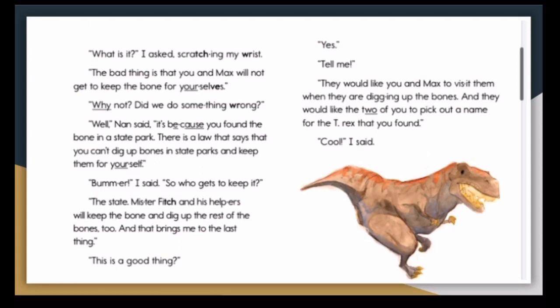What is it? I asked, scratching my wrist. The bad thing is that you and Max will not get to keep the bone for yourselves. Why not? Did we do something wrong? Well, Nan said, it's because you found the bone in a state park. There is a law that says that you can't dig up bones in the state park and keep them for yourself. Bummer, I said. So who gets to keep it? The state. Mr. Fitch and his helpers will keep the bone and dig up the rest of the bones too. And that brings me to the last thing.